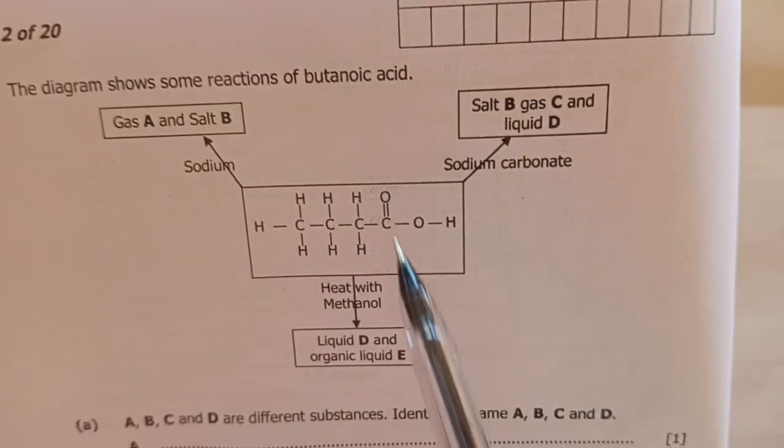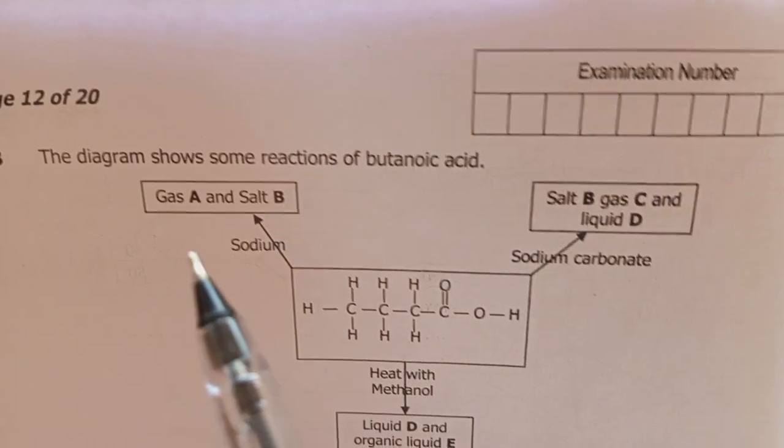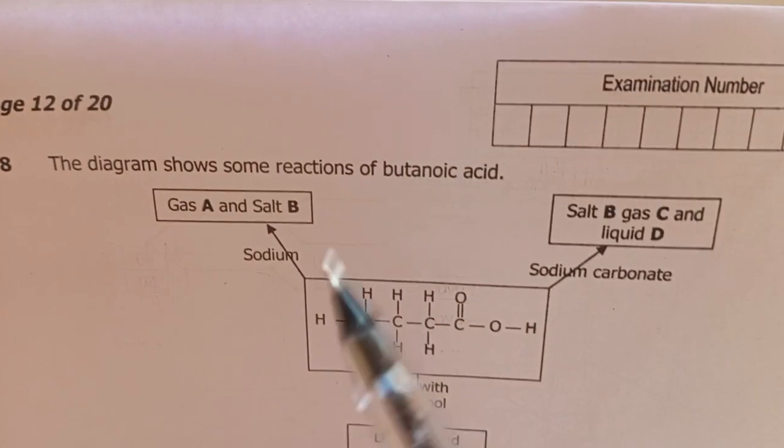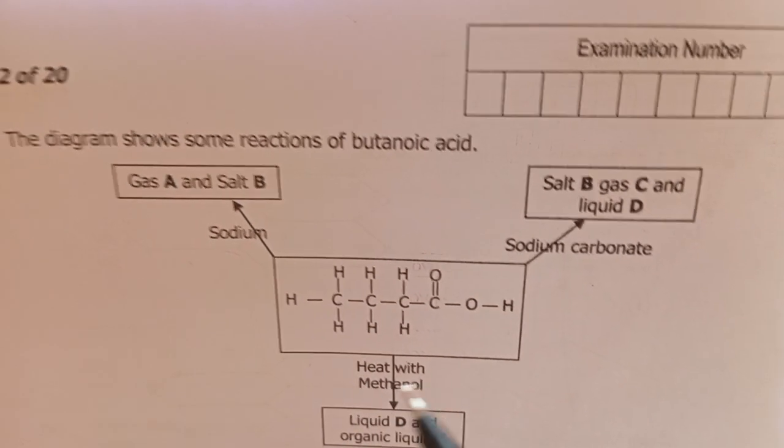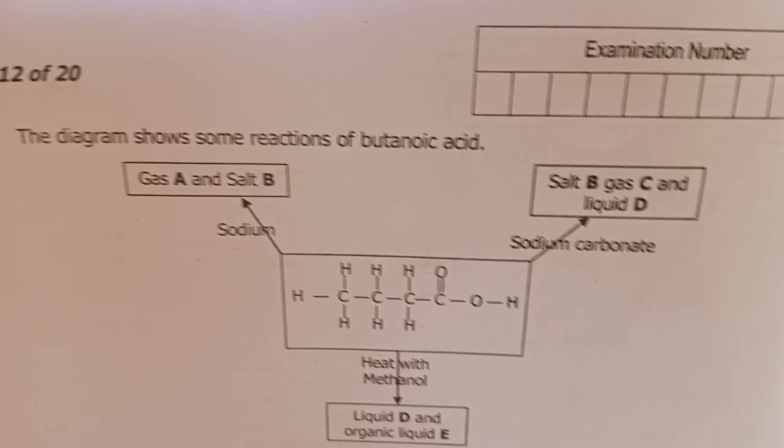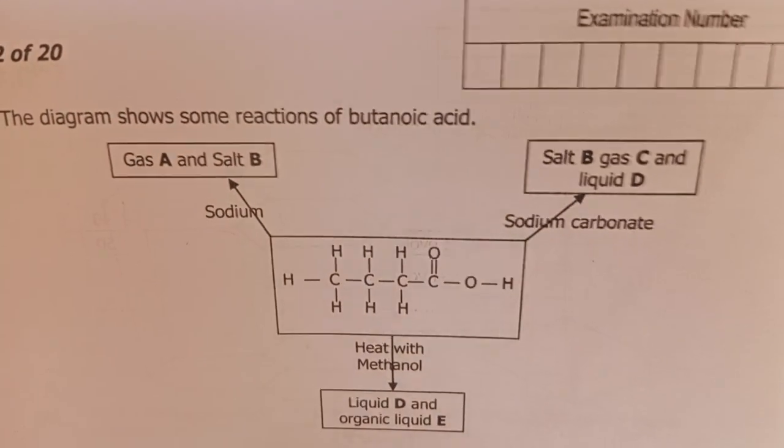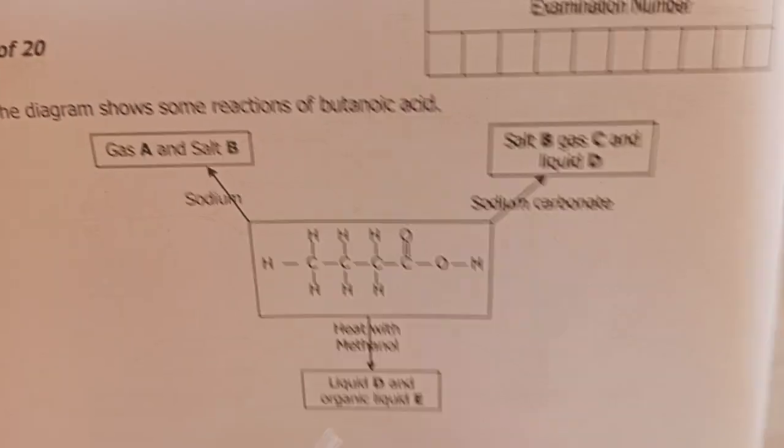So this acid reacts with sodium to give salt B. What is the name of the acid? We've been told it's butanoic acid. So butanoic acid reacts with sodium metal; the product is sodium butanoate plus hydrogen gas.